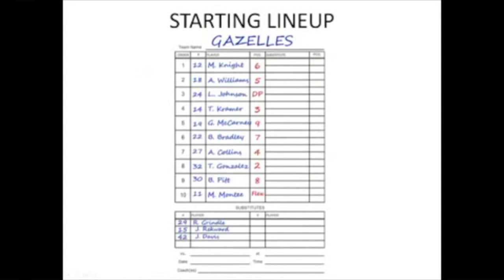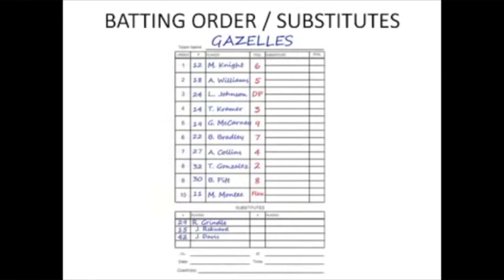Let's talk about the starting lineup. With DP-FLEX, you have ten starters, not nine. Both the DP and the flex are starting players. The DP and the flex must be indicated on the starting lineup. Once the starting lineup has been given to the umpire, these positions cannot be added. As with any substitution, a substitute bats where the player she replaced was batting. The DP and flex are joined at the hip with respect to the batting order. If both players are in the game, the flex has number 10 in the batting order.